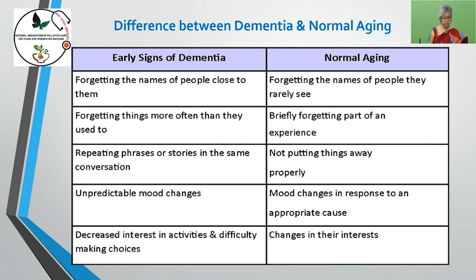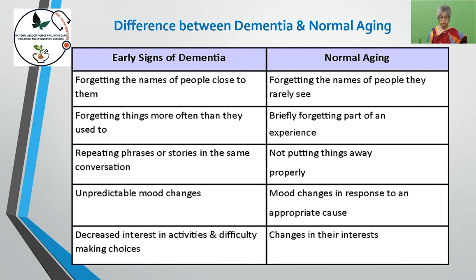In dementia, there is repeating of phrases or stories within the same conversation. In normal aging, there may be not putting things away properly. In dementia, there are unpredictable mood changes, whereas in normal aging, mood changes occur in response to an appropriate cause. In dementia, there is decreased interest in activities and difficulty making choices, while in normal aging, there are gradual changes in the person's interests.